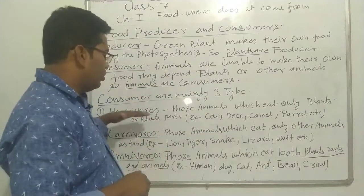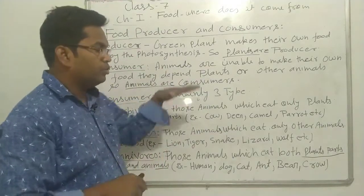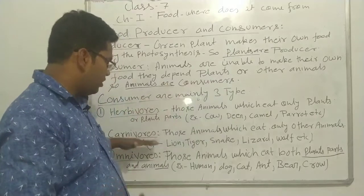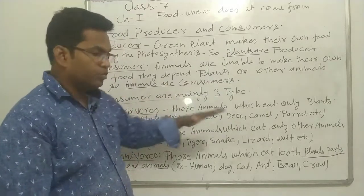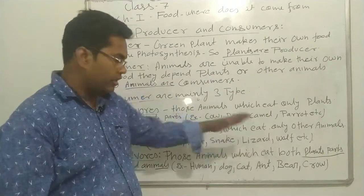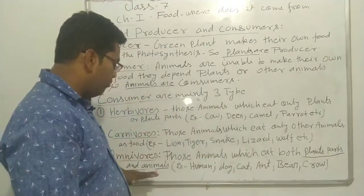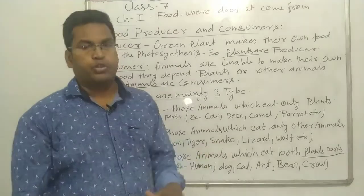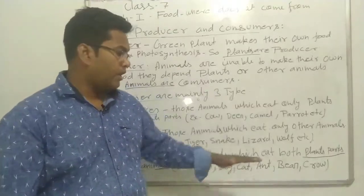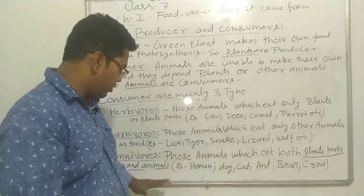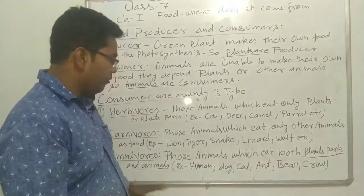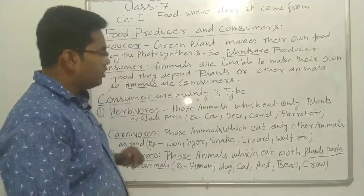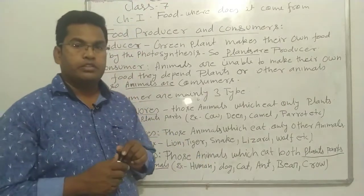So herbivores use only plants, carnivores use only animals as food, and omnivores are those who eat both plants and animals.